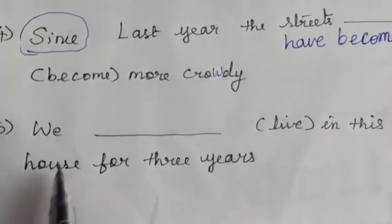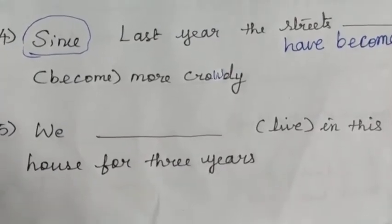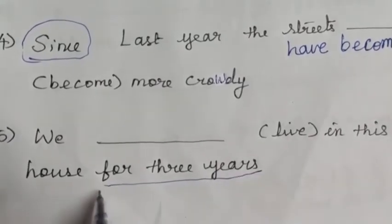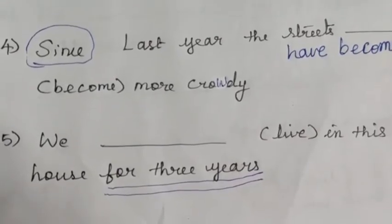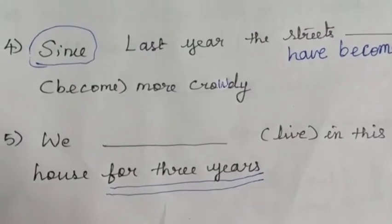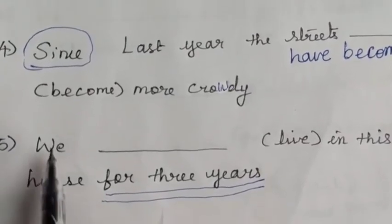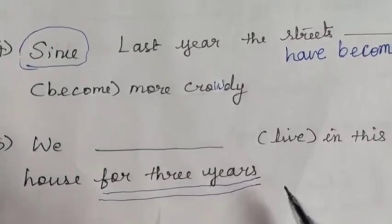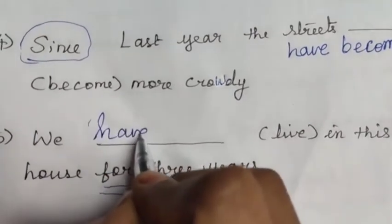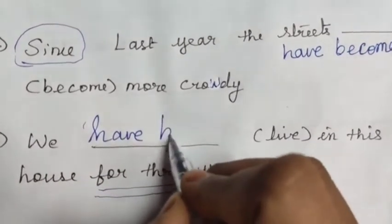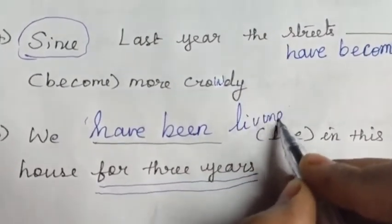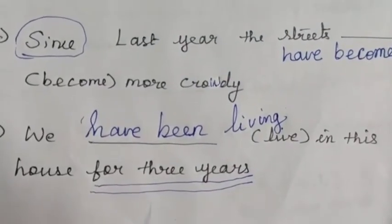Next: 'We dash live in this house for 3 years.' 'For' is the clue word for present perfect continuous tense. 'We' is plural, so 'have'. The verb 'live' can take -ing. So: 'We have been living in this house for 3 years.' The action started 3 years ago and is still continuing.